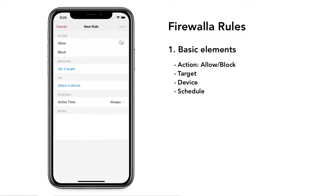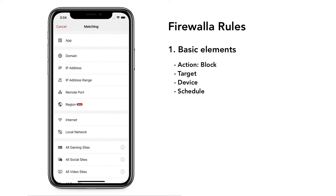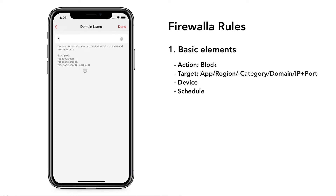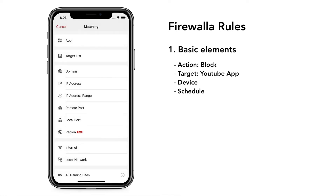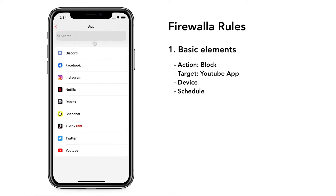The Allow action can be used if you want to give exceptions to blocking rules. A rule's target can be an application, a region name, a category of sites, or a combination of domain, IP, and port. You can also use a domain name like *.facebook.com or *.adult to block a top-level domain. To block YouTube, tap on App and select YouTube.